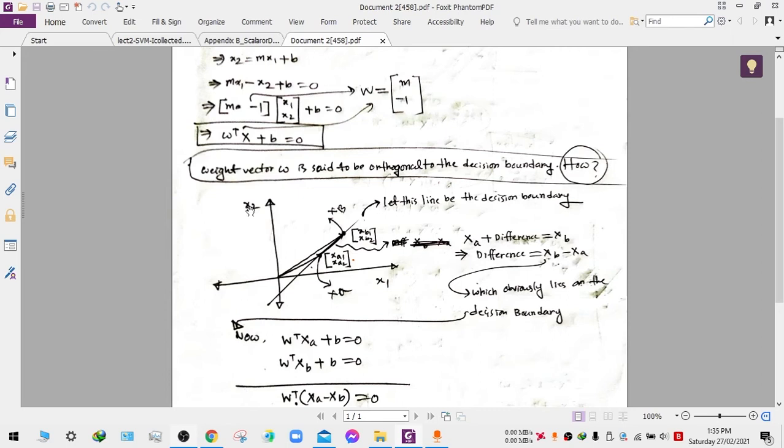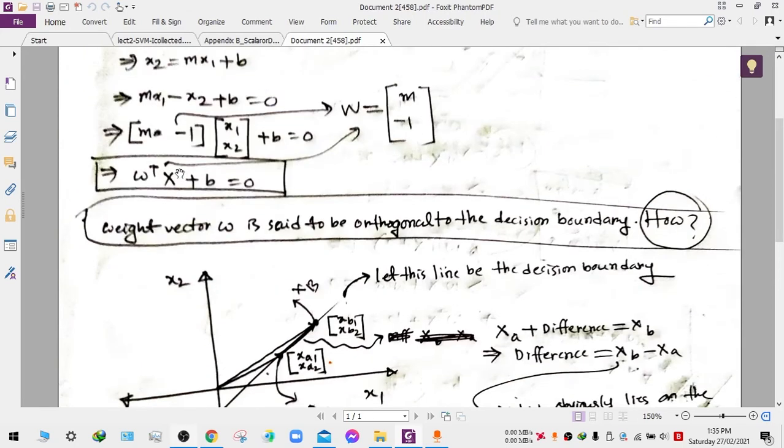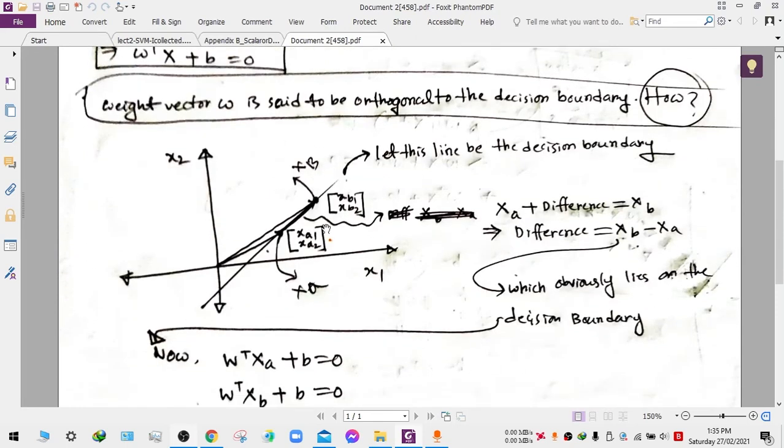How will we demonstrate that? Using this diagram. So this is our decision boundary. This line is our decision boundary, represented using this formula. And consider that there are two points, as it is two-dimensional.